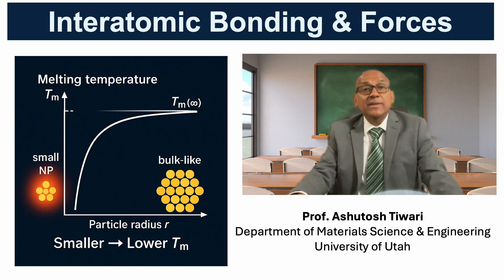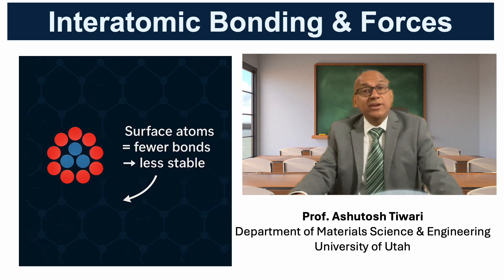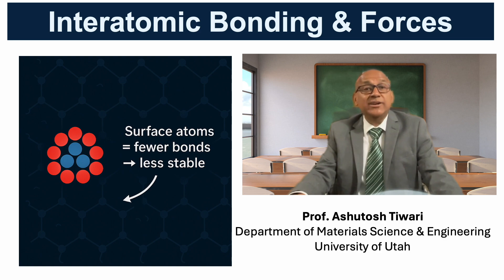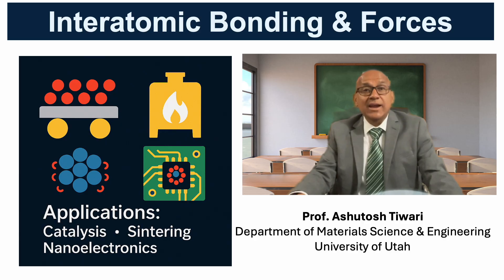This equation shows that as the particle's radius becomes smaller, the melting temperature drops significantly. The reason lies in surface energy. Nanoparticles have a very high surface-to-volume ratio, meaning that many atoms are at or near the surface with broken or weakened bonds. These surface atoms destabilize the solid phase, making it easier for the particle to melt. That is why nanoparticles can melt at hundreds of degrees lower than their bulk counterparts.